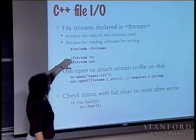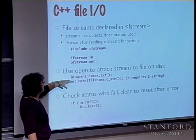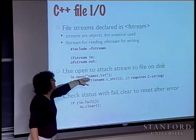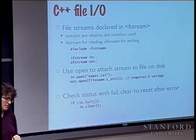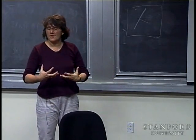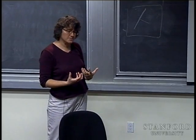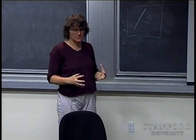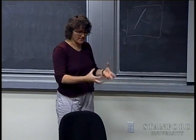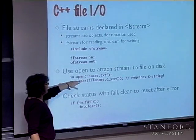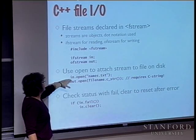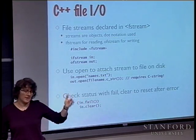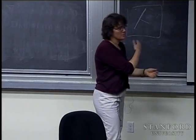Before you do anything with a file stream, you need to attach it to a named file on disk using the open operation. ifstream and ofstream are objects, so dot notation is used — in this case telling the input stream to open the file named "names.text". Open assumes the current directory if you don't give a more fully specified path. Once opened, the file position cursor is at the beginning of the input stream.